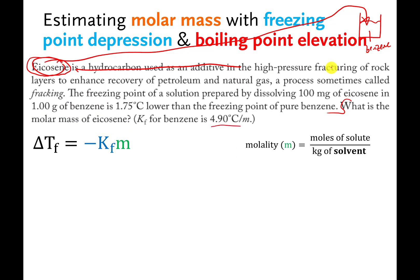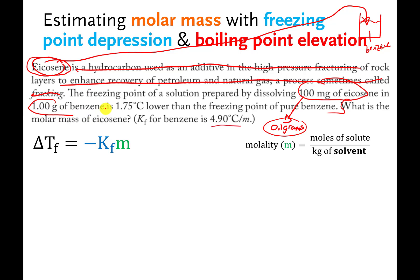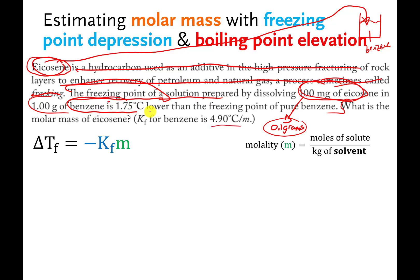Here's the information. They take 100 milligrams of icosine — and it's important to remember that 100 milligrams is the same thing as 0.1 grams. They dissolve it in 1 gram of benzene. When they do this, the freezing point of the solution that has icosine and benzene is 1.75 degrees Celsius lower than the freezing point of pure benzene. So what they're telling you here is that this is the delta T sub F number — that's how much the freezing point goes down, or how much it's depressed.